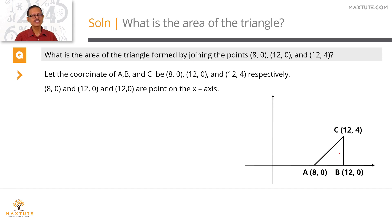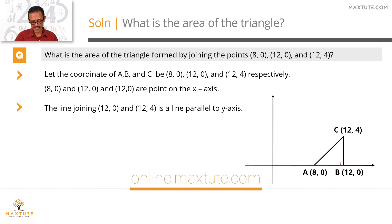So this line BC is parallel to the y-axis. Now what triangle do we have in ABC? AB is on the x-axis, and BC is parallel to the y-axis, which means that angle ABC is going to be a right angle. The given triangle is a right angle triangle.